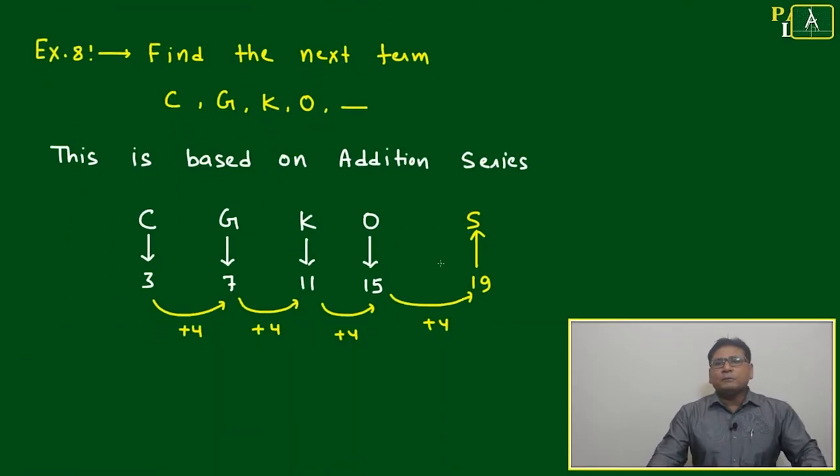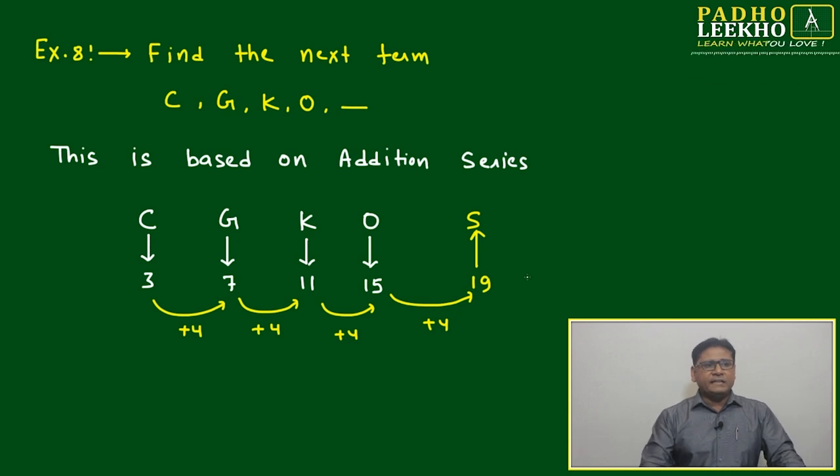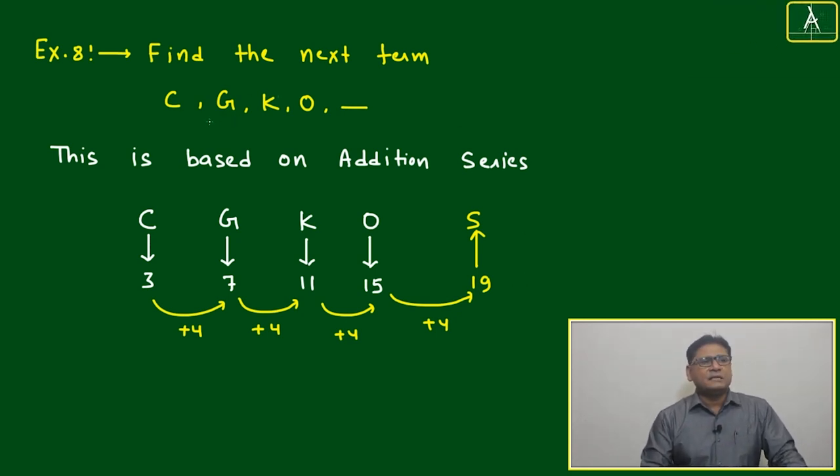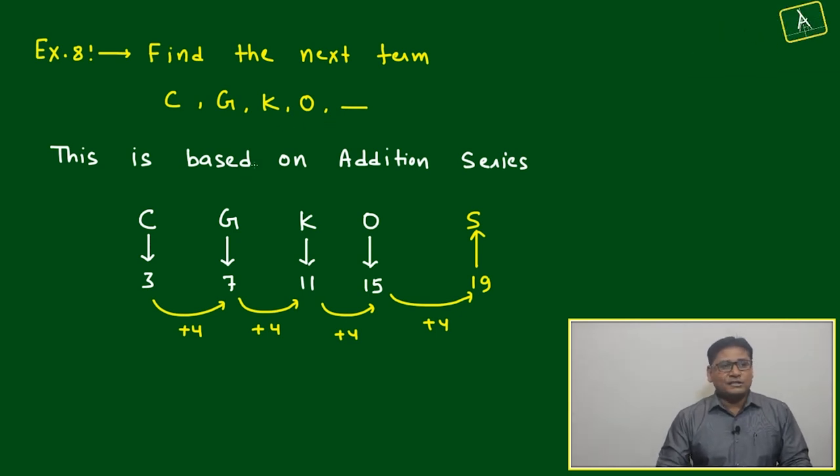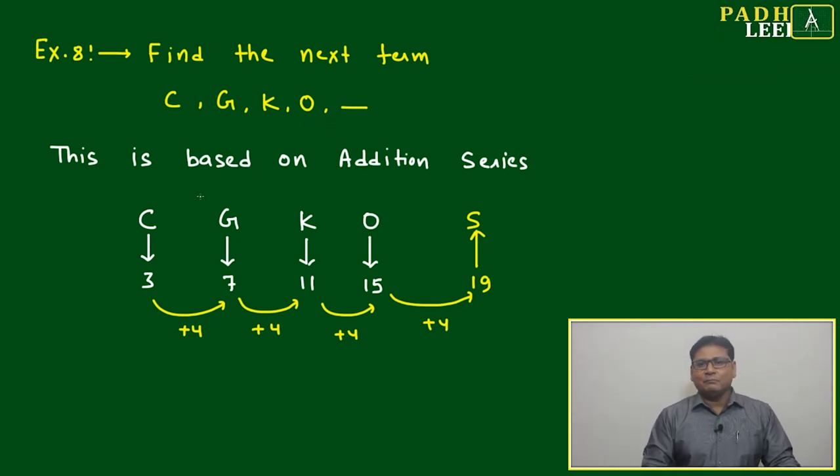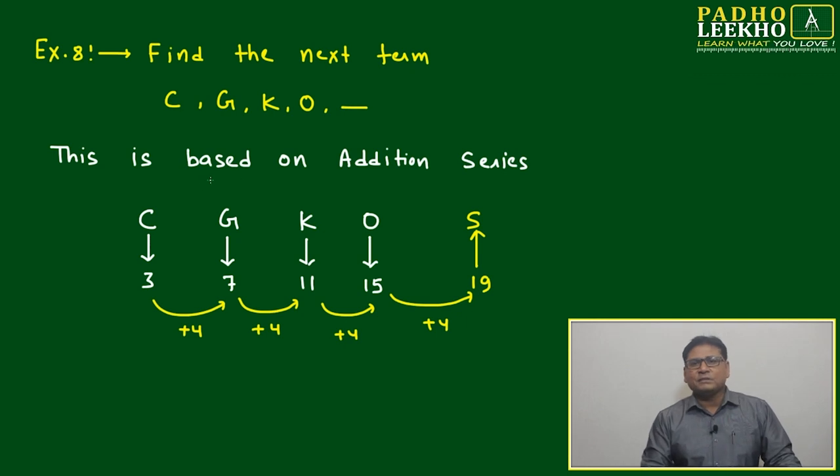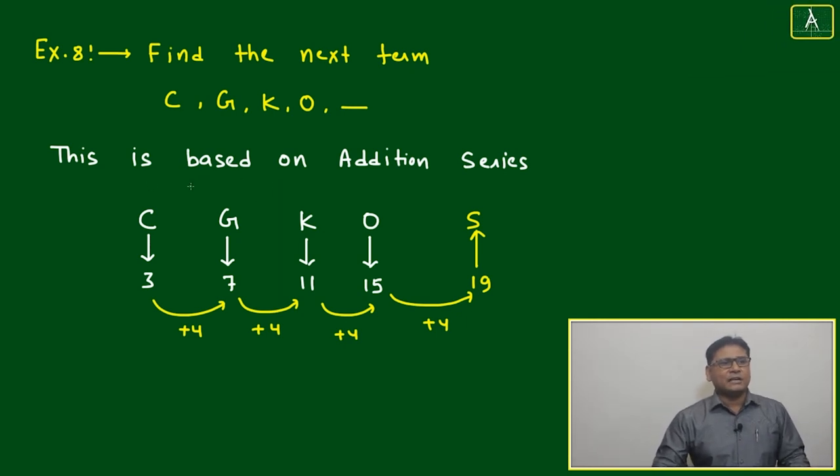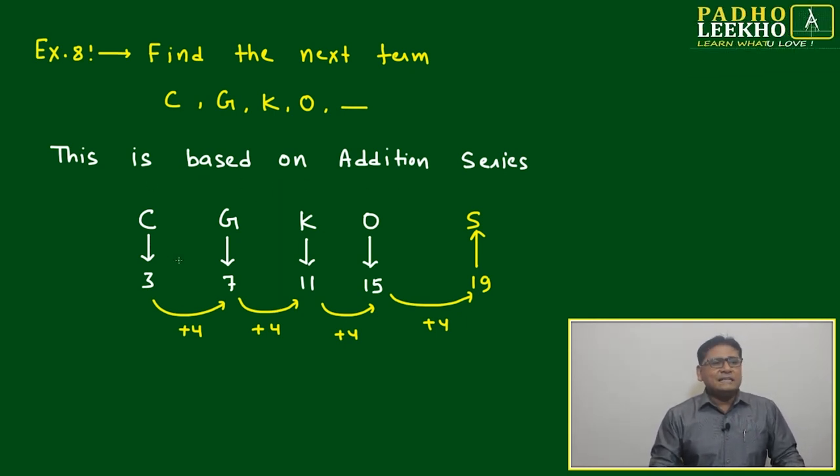We'll try to solve example number 8. Find the next term - missing term. C, G, K, O, __. We don't know what is given. Some code is given. We are not able to crack it. Just we'll try to understand what is this code. C is three, G is seven, K is eleven, O is fifteen.